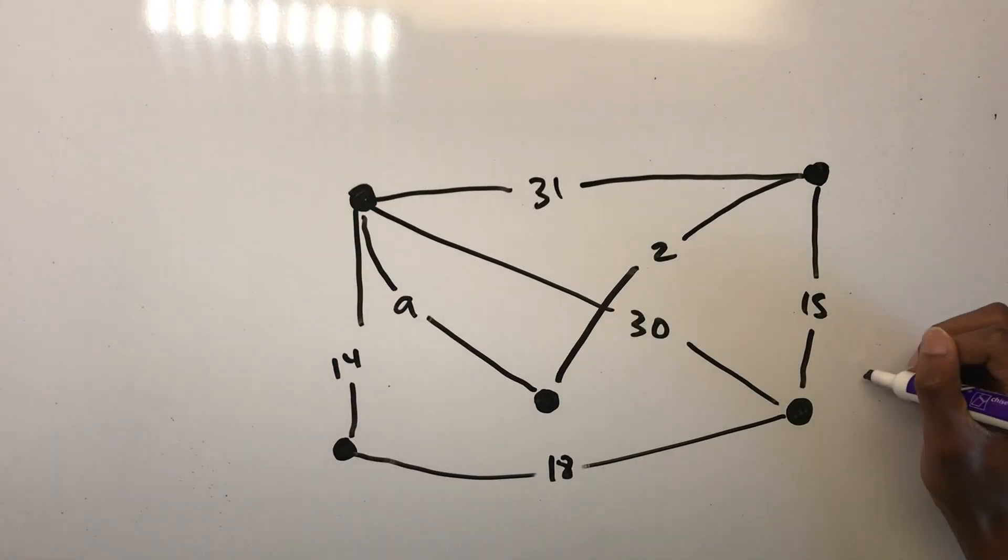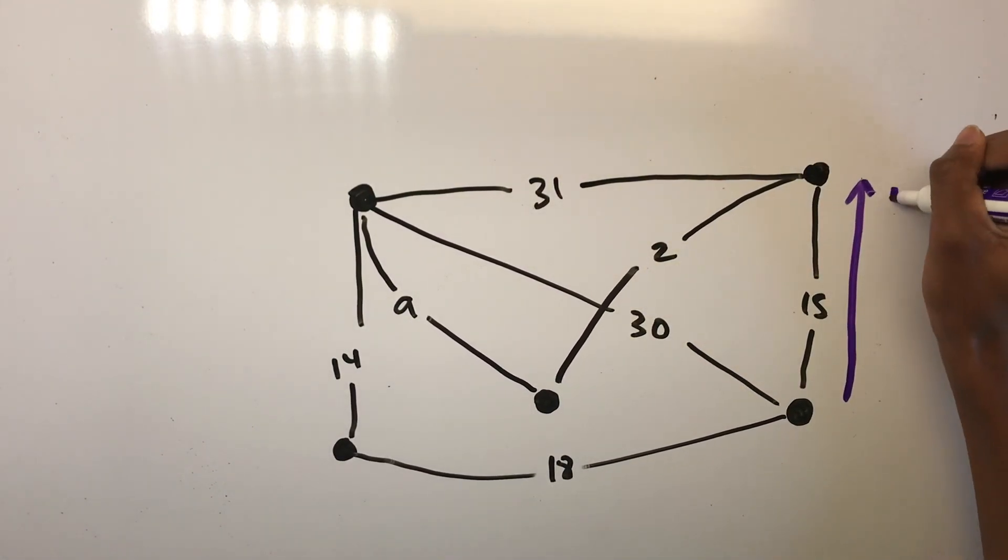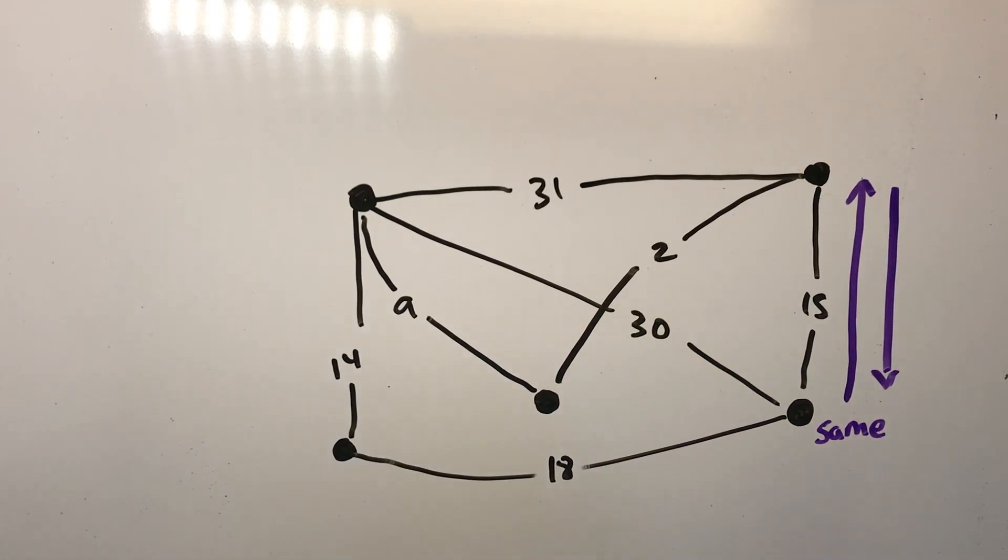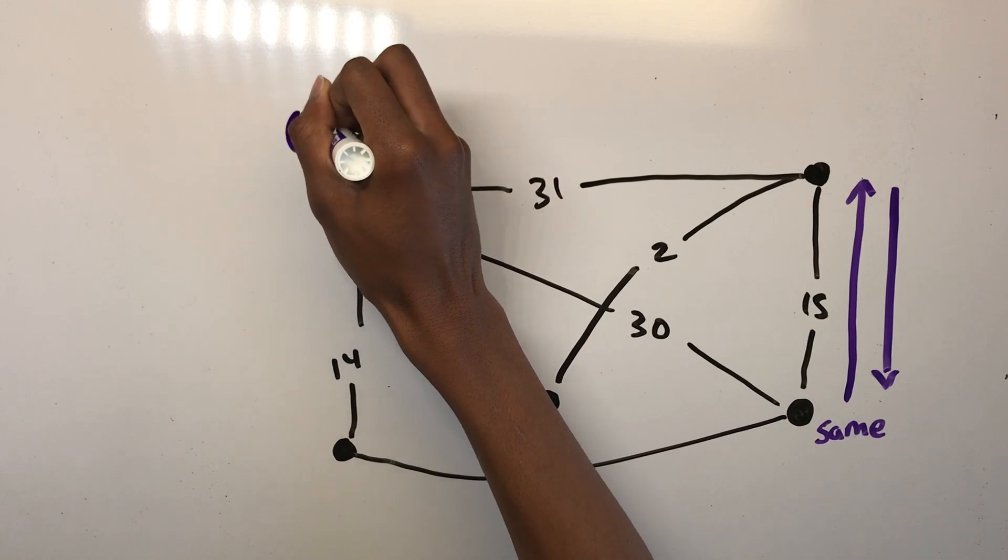Here's some history behind the traveling salesman problem. As I just stated, the travel costs are symmetric in the sense that traveling from city X to city Y costs just as much as traveling from Y to X. The way of visiting all the cities is simply the order in which the cities are visited.